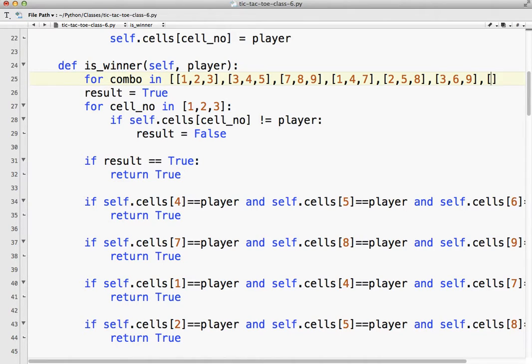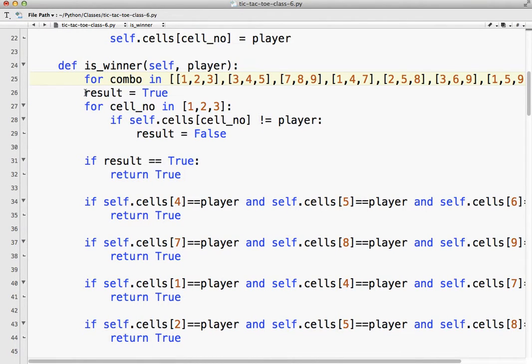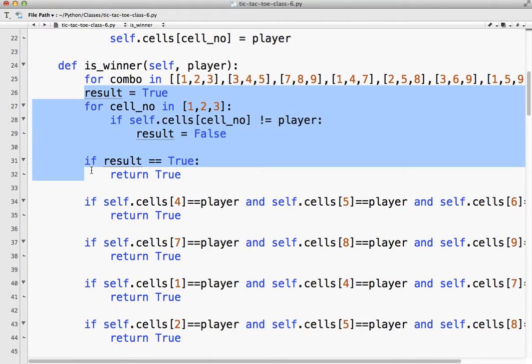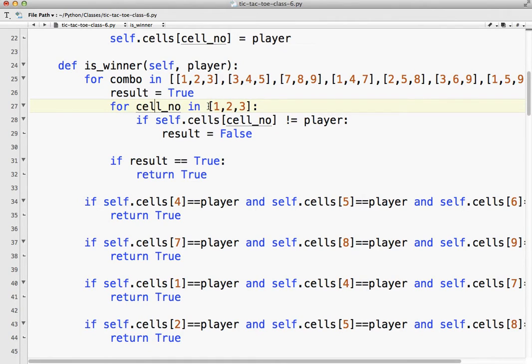Now we have to do the diagonals, which are 1, 5, 9. And the last one is 3, 5, 7. So those are all of our possible combinations. So all I'm going to do is I'm going to tab that over. And instead of 1, 2, 3, I'm just going to say combo.